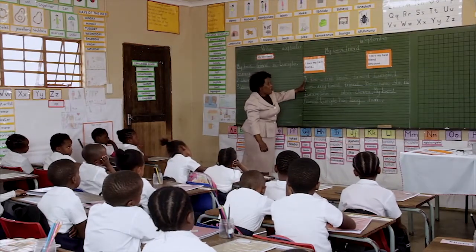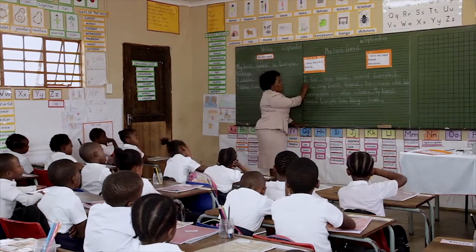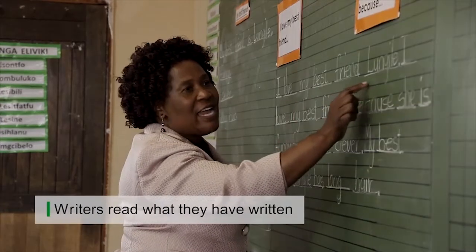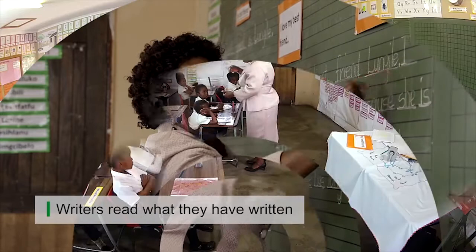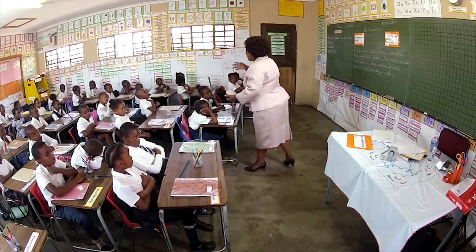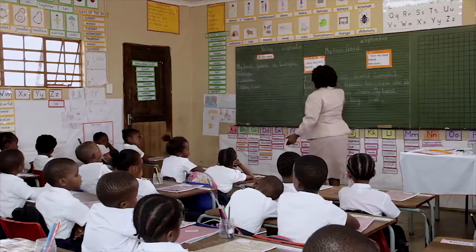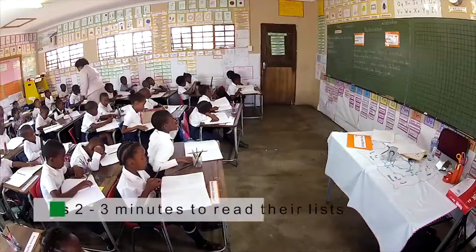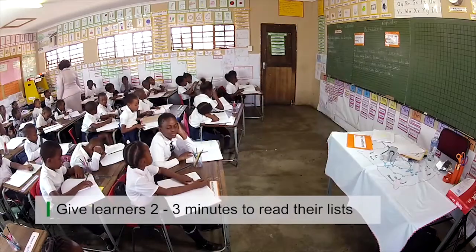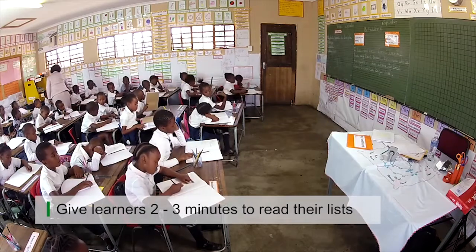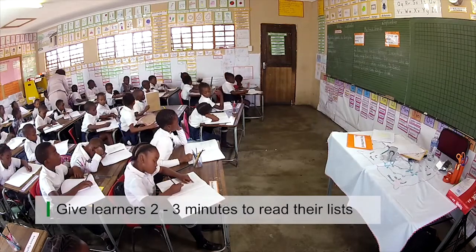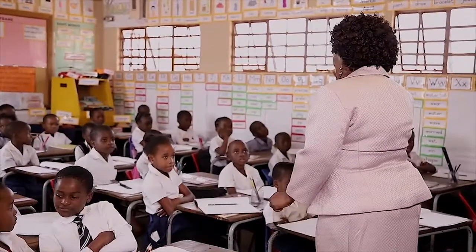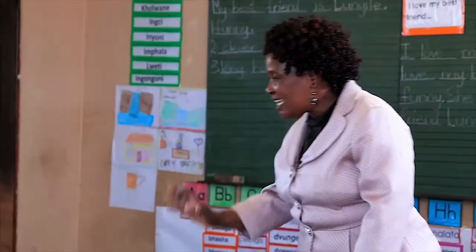Let us read the whole paragraph now. I love my best friend. Writers read what they have written. You are now making the sentences that will make a paragraph about your friend. You open your books and read what you wrote yesterday. Give learners two to three minutes to read their lists.